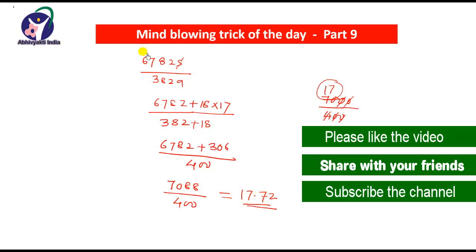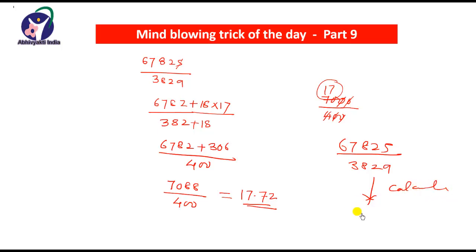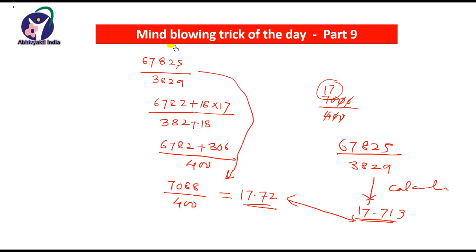Using the calculator, 67,825 divided by 3,829 gives 17.713. So these two answers are very very close. Such big divisions you can also solve using this mind-blowing trick of the day and solve within seconds.